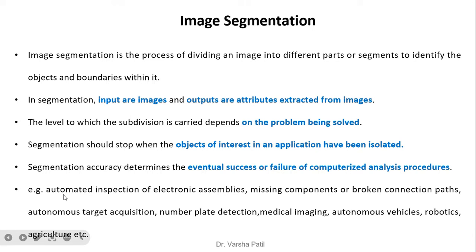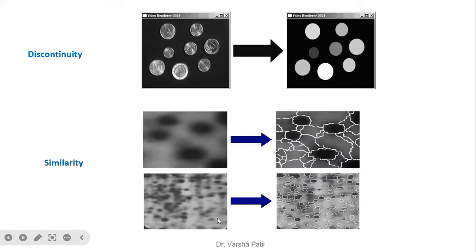Applications of segmentation include automated inspection of electronic assemblies such as missing components or broken connection paths, autonomous target acquisition, number plate detection, medical imaging, autonomous vehicles, robotics, and agriculture. Based on discontinuity, we identify the boundaries of objects, and based on similarity, we identify similar regions inside the boundary.